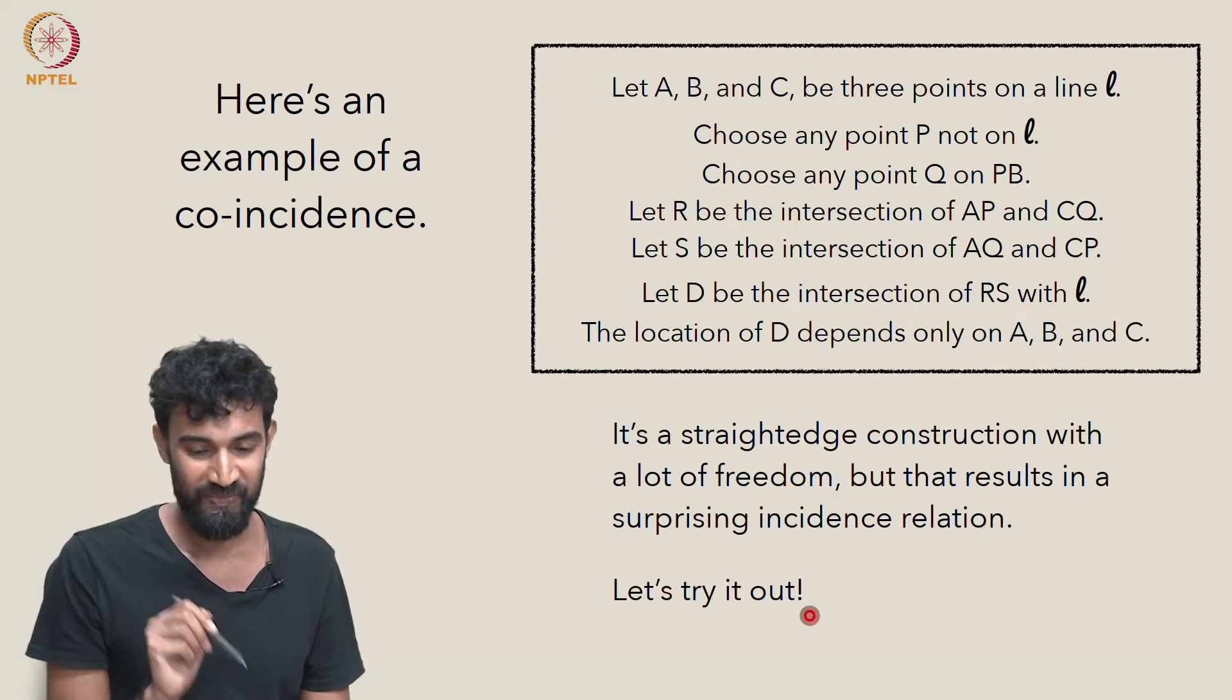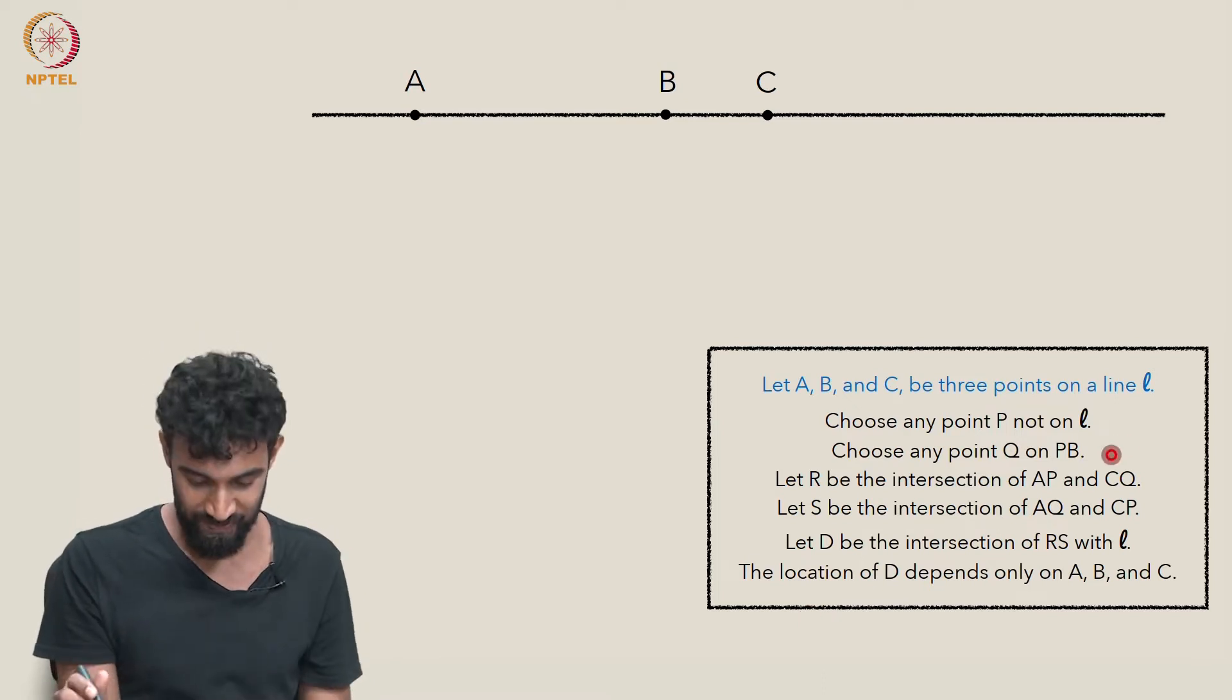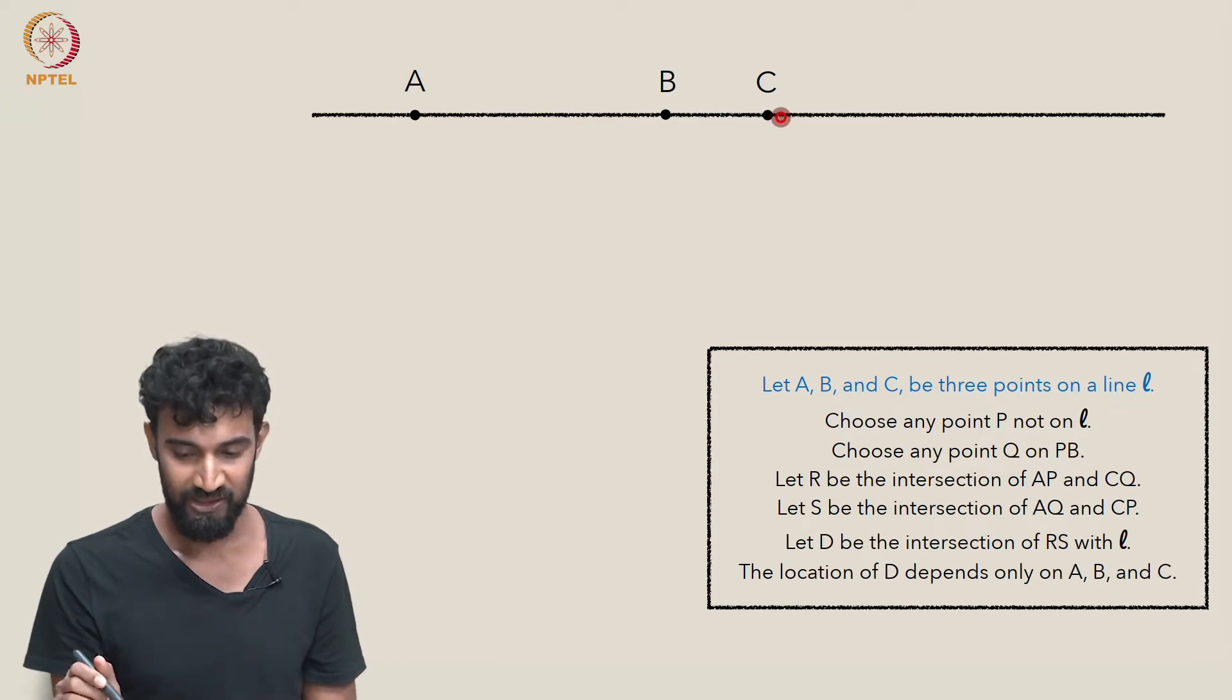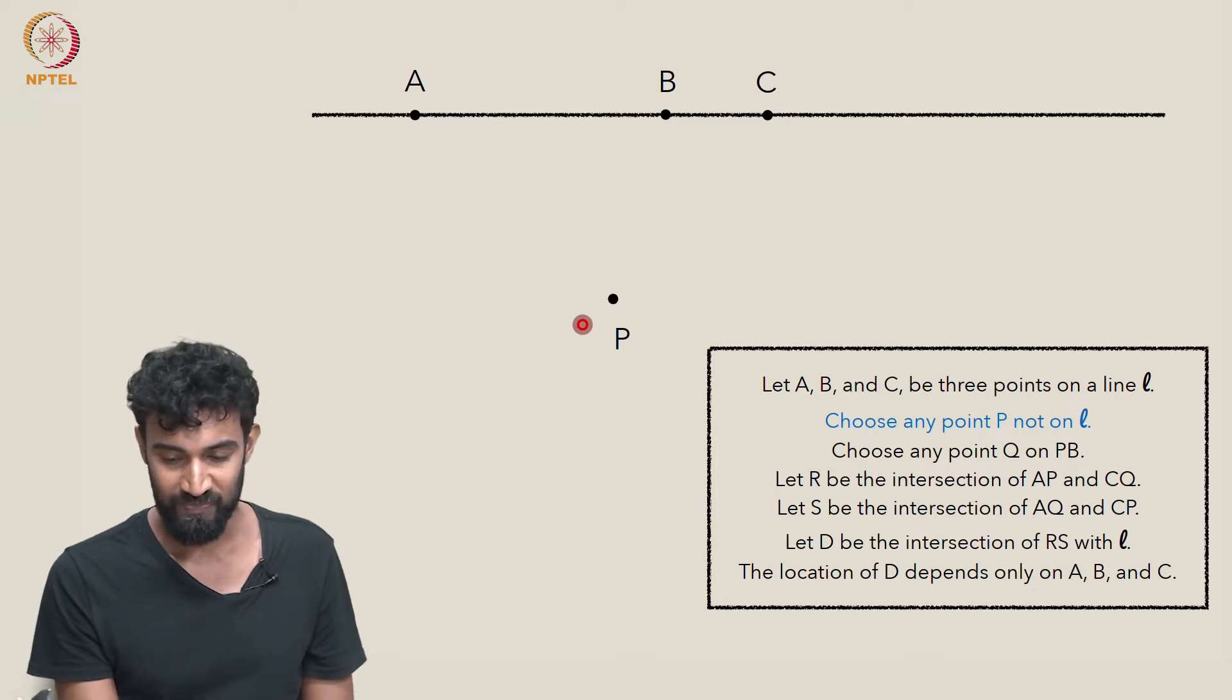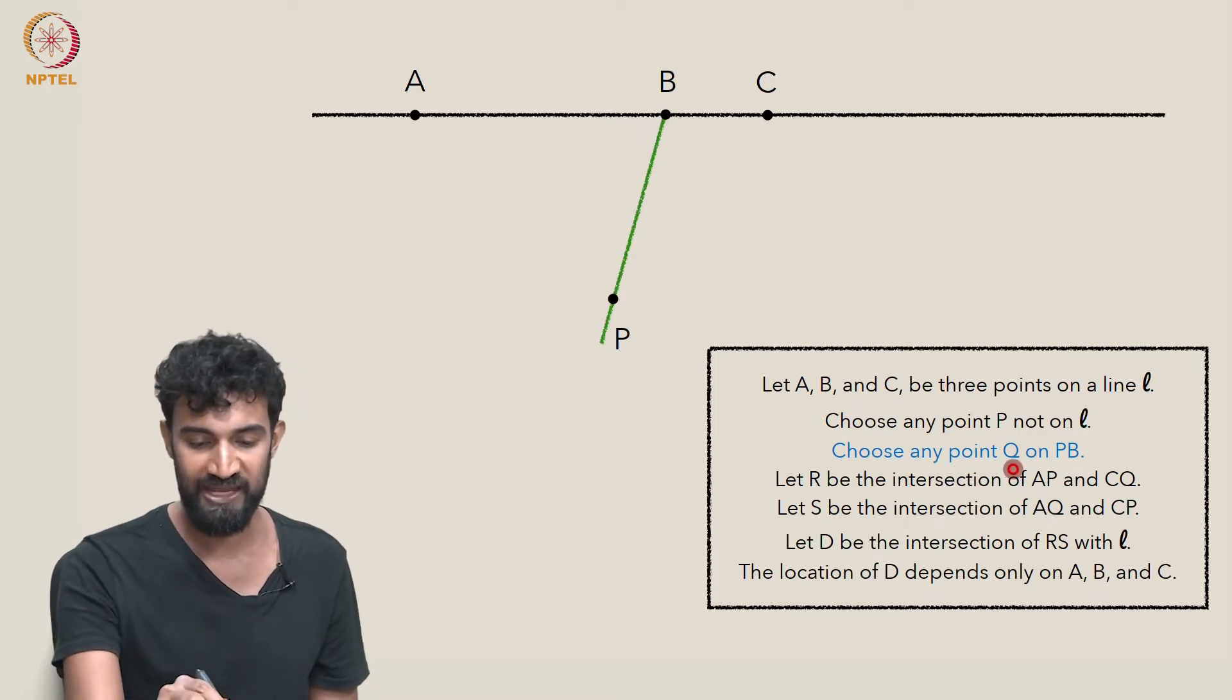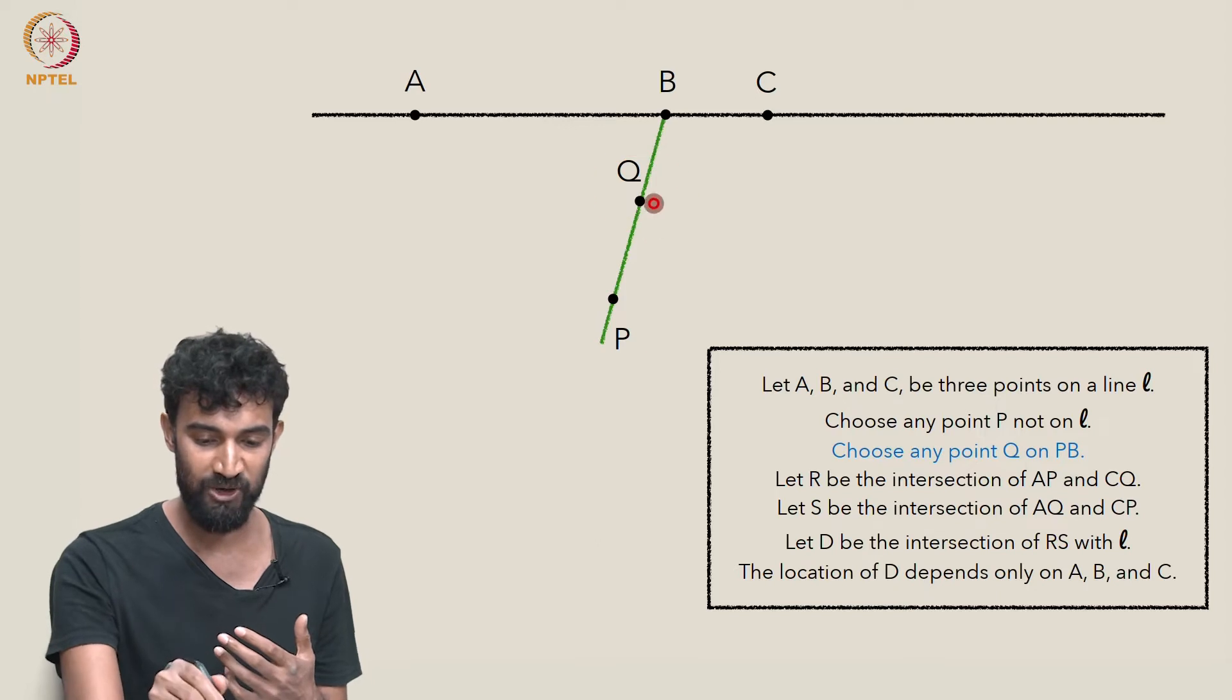So let's try this out. Let's just follow the recipe and do the construction. Let A, B, and C be three points on a line L. This is our line L. A, B, and C are three points. They're collinear. Let's choose a point P that's not on L, somewhere off of L. And now let's choose any point Q on the line PB. So first let's draw PB, and then let's just choose a point Q anywhere on PB. So let's choose one here. So that's our second choice.